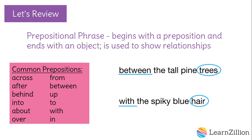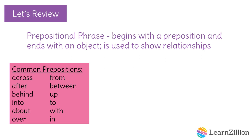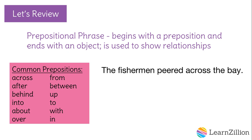Prepositional phrases can come at the beginning, middle, or end of a sentence. They can also act as either an adjective, describing a noun or pronoun in a sentence, or as an adverb, describing a verb in a sentence. For example, "The fisherman peered across the bay." "Across the bay" is a prepositional phrase describing where the fisherman peered, so it's acting like an adverb because it's describing a verb.